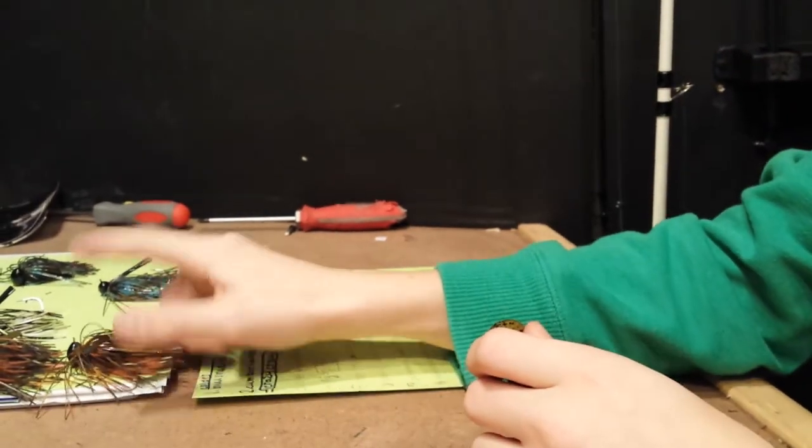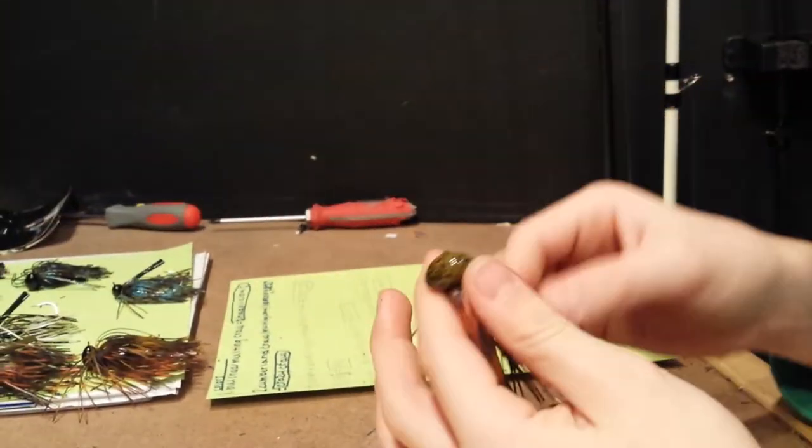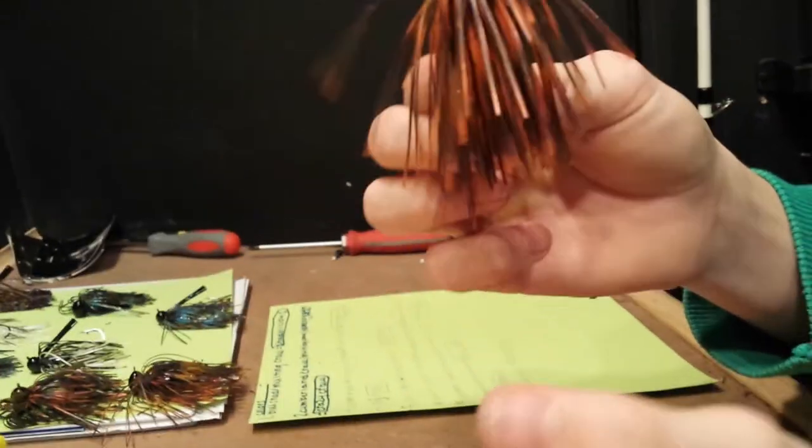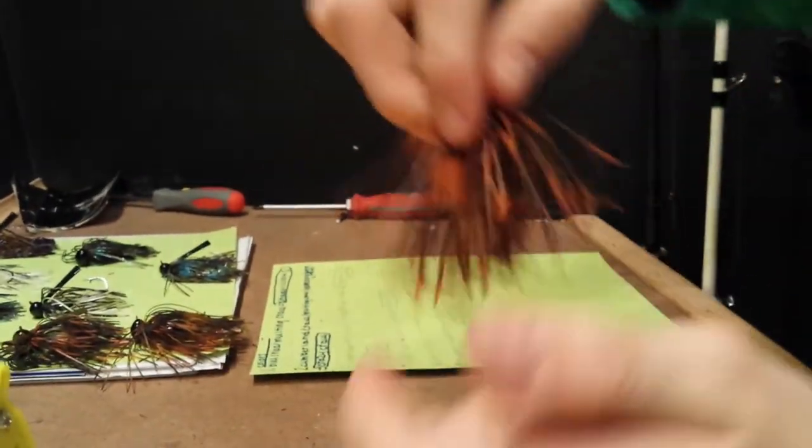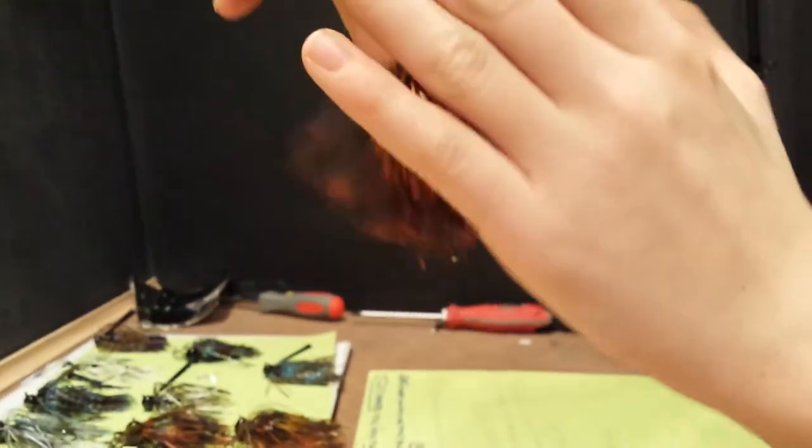This one is Tabasco. By the way, the previous ones were 3.8 ounce black heads. This is a half ounce green pumpkin head with Tabasco color. As you can see, I have them flared out that way. Looks really cool.